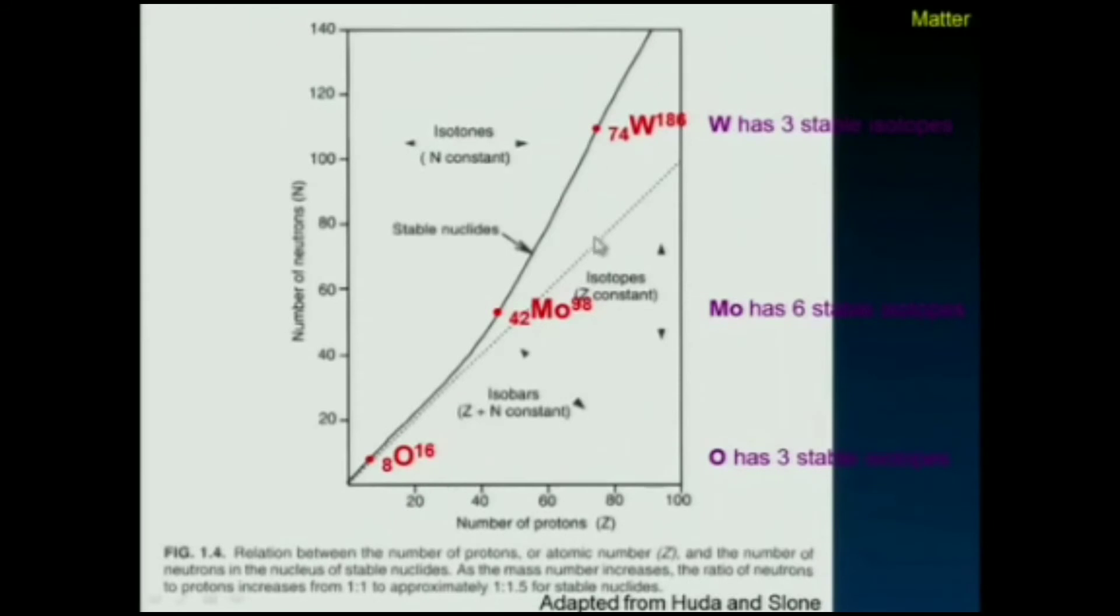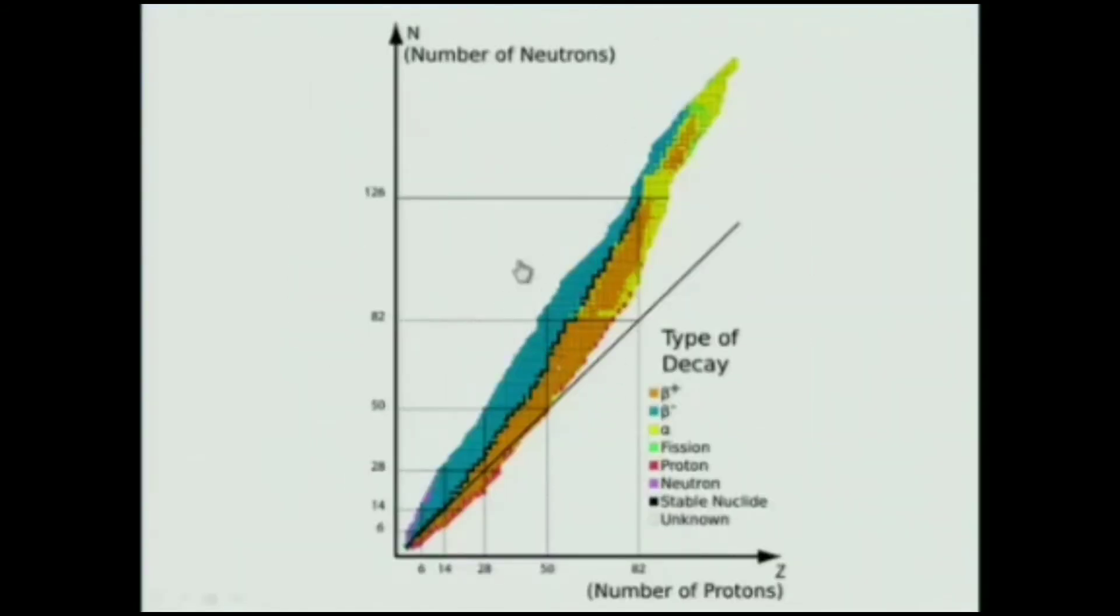This graph shows some of the different atoms. Here's oxygen O-16. Here's molybdenum, the 42nd element with 42 protons. And here's tungsten with its 74 protons. It turns out oxygen has three stable isotopes, molybdenum has six stable isotopes, and tungsten has three. So this notion that there's this simple curve of stable nuclides is really incorrect. This is really a better picture of how things look. The black dots correspond to the stable isotopes.